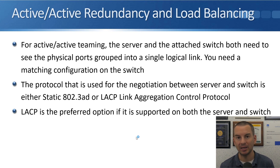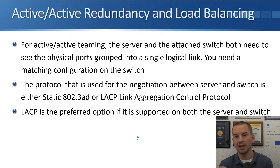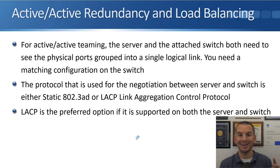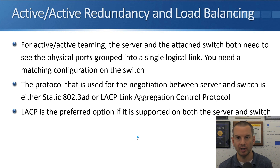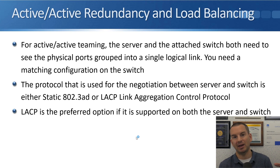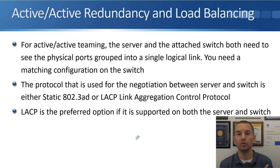The reason is that for active-active teaming, the server and the attached switch both need to see the physical ports grouped into a single logical link. So you need to configure both the server and the switch it's plugged into with a matching configuration so they both know you're using NIC teaming. You don't need to do that with active standby — the switch will automatically learn if it fails over from one port to the other, seeing the MAC address move. But when using active-active load balancing, the switch sees one MAC address and needs to know it's reachable through two different ports.